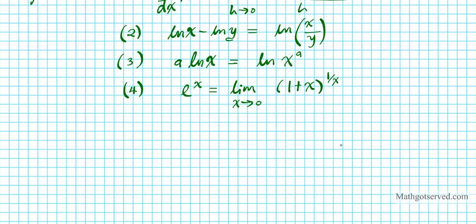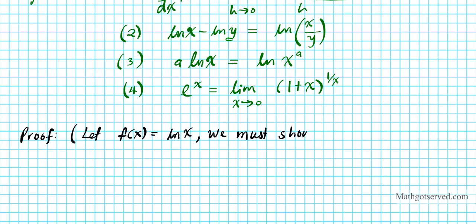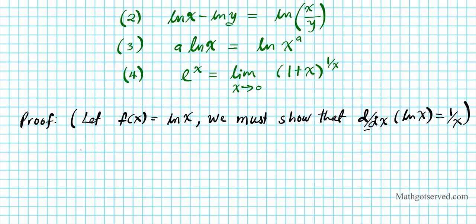Let's start the proof. Let f(x) be the natural log of x. We want to show that d/dx of ln(x) equals 1 over x. Now, if f(x) is the natural logarithm of x, then f(x+h) is simply the natural logarithm of x plus h — you replace the argument x with x plus h.